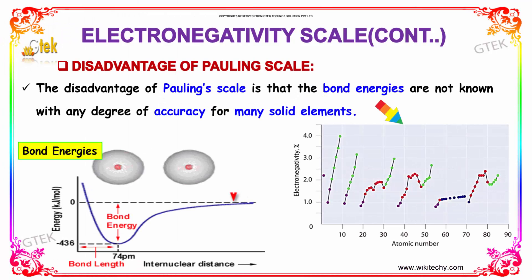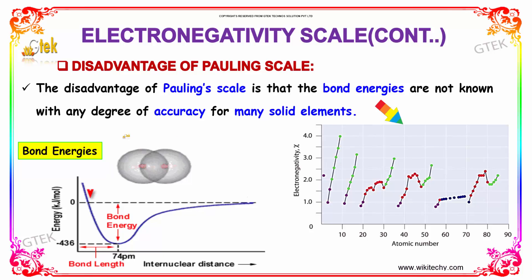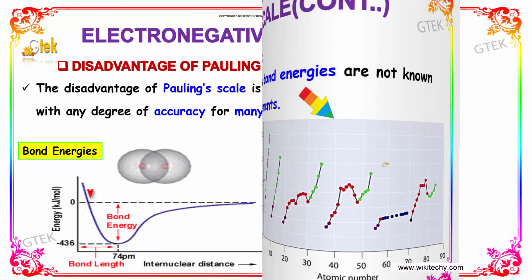What could be the disadvantage of the Pauling scale? The disadvantage is that bond energies are not known with any degree of accuracy for many solid elements. That is the major problem.